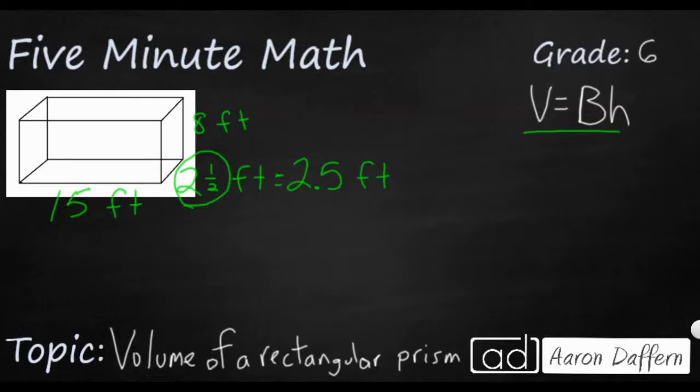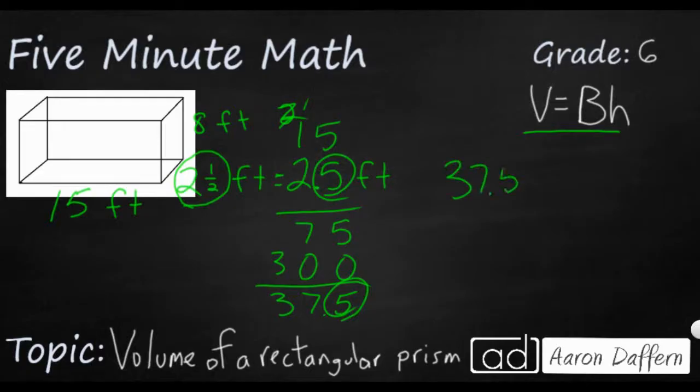So our base is going to be 15 times 2.5. So we're going to multiply it like it doesn't have any decimals. We'll deal with that decimal in just a moment. So that's going to be 75. And that's going to be 10. And that's going to be three. So it looks like 375. But remember, we had the decimal. There was one digit behind the decimal place. We're going to put one digit behind the decimal place in the answer. So we're going to take our 37.5 inches squared.